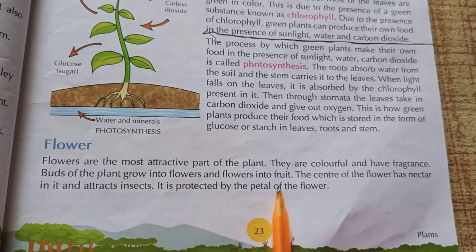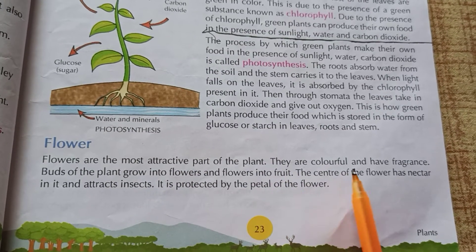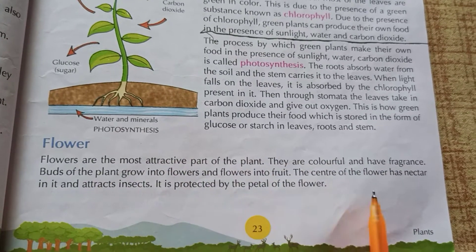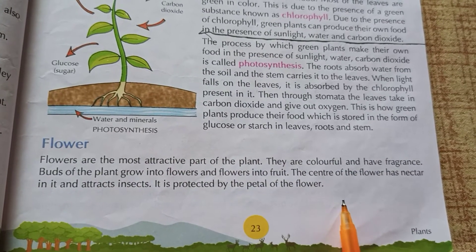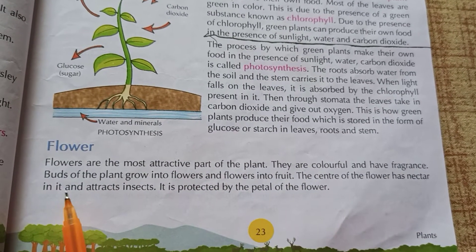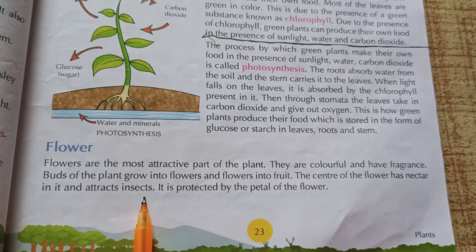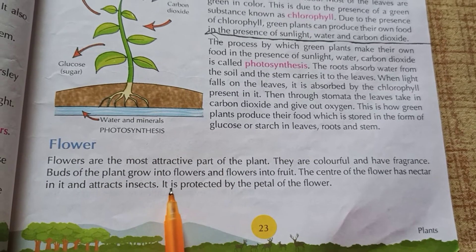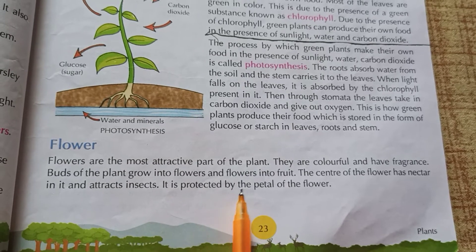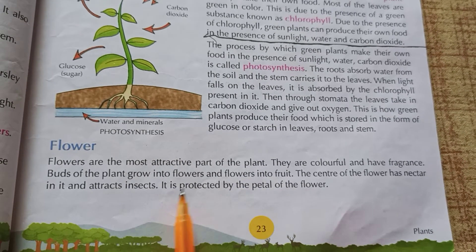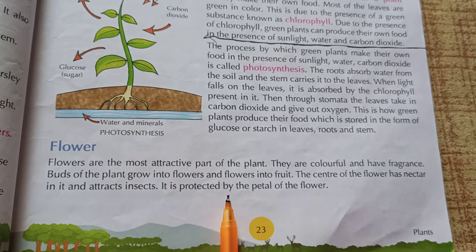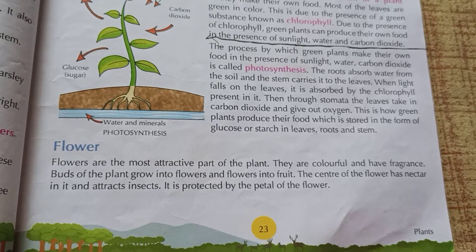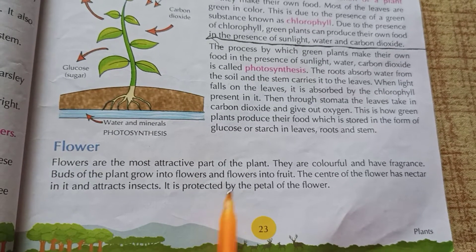What is the flower? The center of the flower has nectar in it. The nectar attracts insects. It is protected by the petals of the flower. The nectar is preserved in the flower — it is produced from the flower.